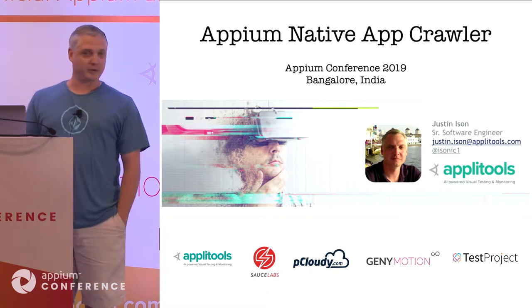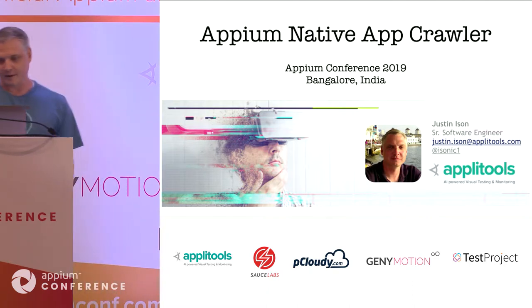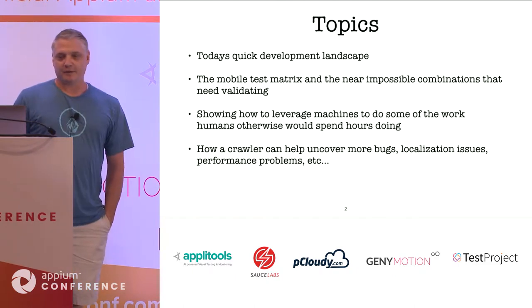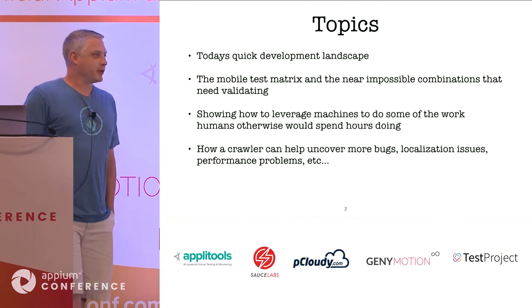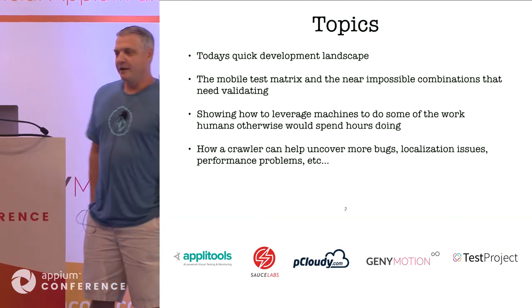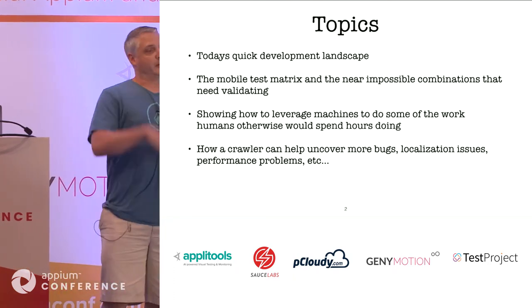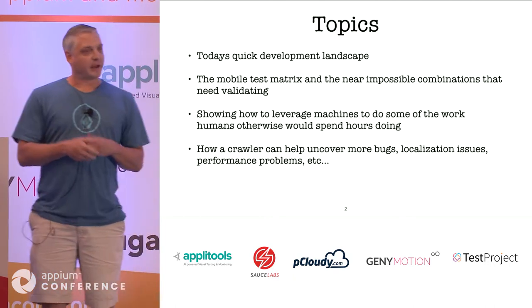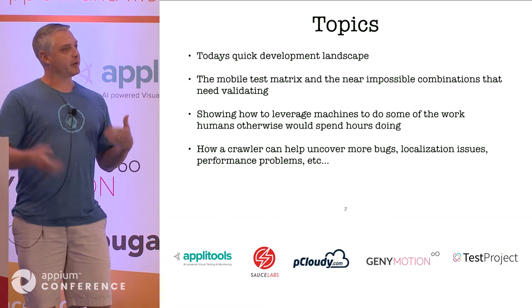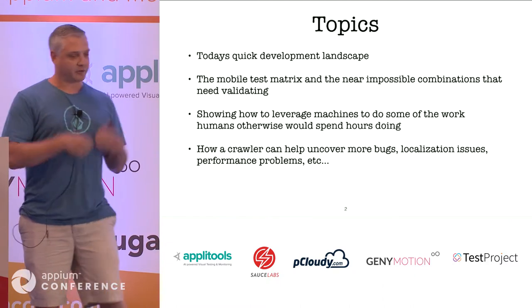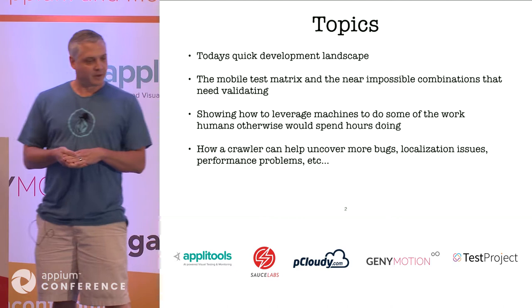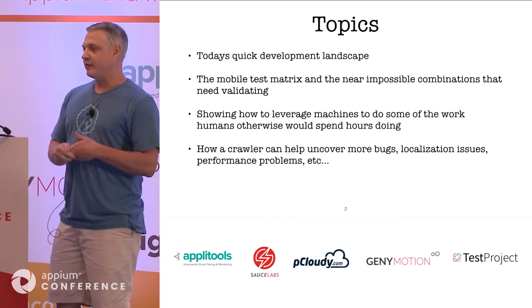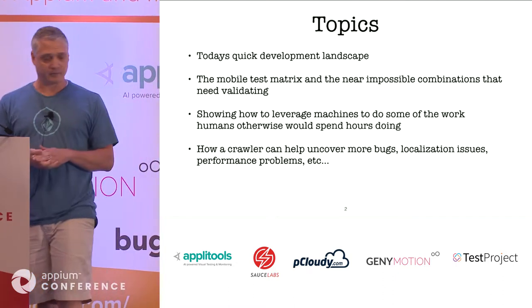Today I'm going to talk about using Appium to build a native app crawler and how I did it, showing you the pros of using something simple. The topics of my talk will cover today's quick development landscape, especially with Agile, the mobile test matrix and all the near-impossible combinations we should validate before release, and how we can leverage machines to do some of the work we're having to pick up manually. Also how the crawler could potentially uncover more bugs, help find localization issues and performance problems.